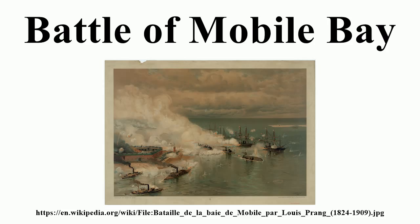The Confederate Torpedo Bureau, directed by Major General Gabriel J. Rains, contributed a passive weapon to the defense. Men of the Bureau had planted 67 torpedoes across the entrance, leaving a gap on the eastern side of the channel so blockade runners and other friendly vessels could enter or leave the harbor. The minefield was well marked by buoys, which Farragut knew well. Its purpose was not necessarily to sink enemy vessels trying to enter, but rather to force them to steer close to Fort Morgan and its guns.